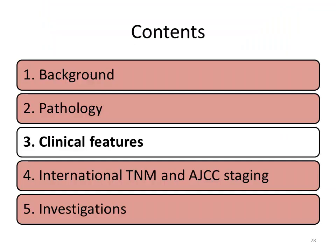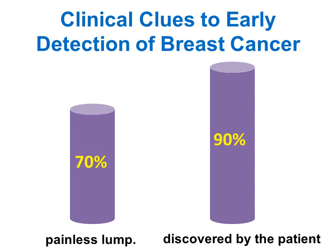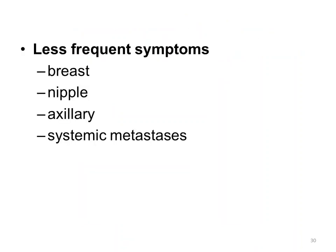Clinical features: almost 70 percent of patients present with a painless lump discovered by the patient herself in 90 percent of cases. Less frequent symptoms include pain, redness, generalized hardness, enlargement or shrinking of the breast, erosion, discharge, nipple retraction, or itching. In the axilla, there may be axillary swelling or masses, and sometimes arm edema. Rarely, the main finding is an axillary lump that proves to be breast cancer.